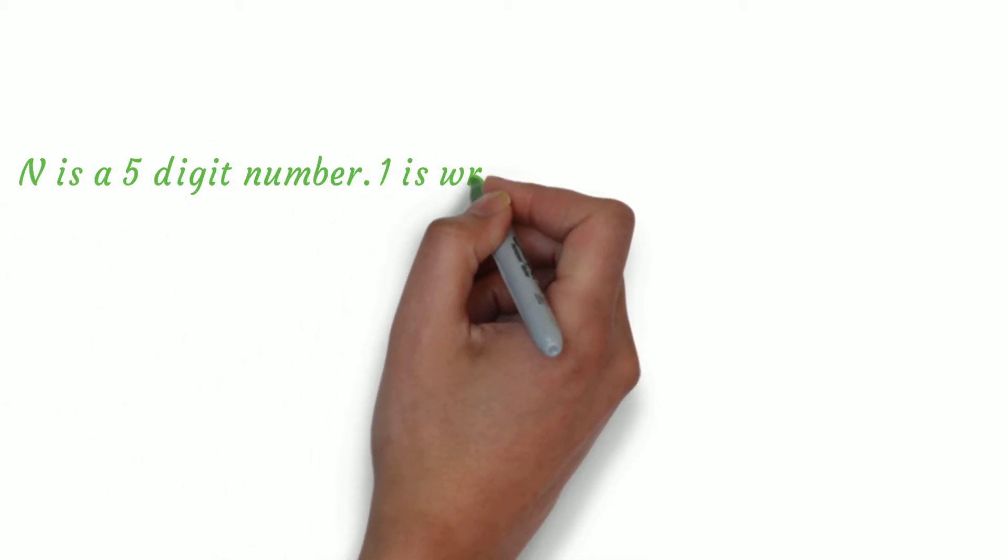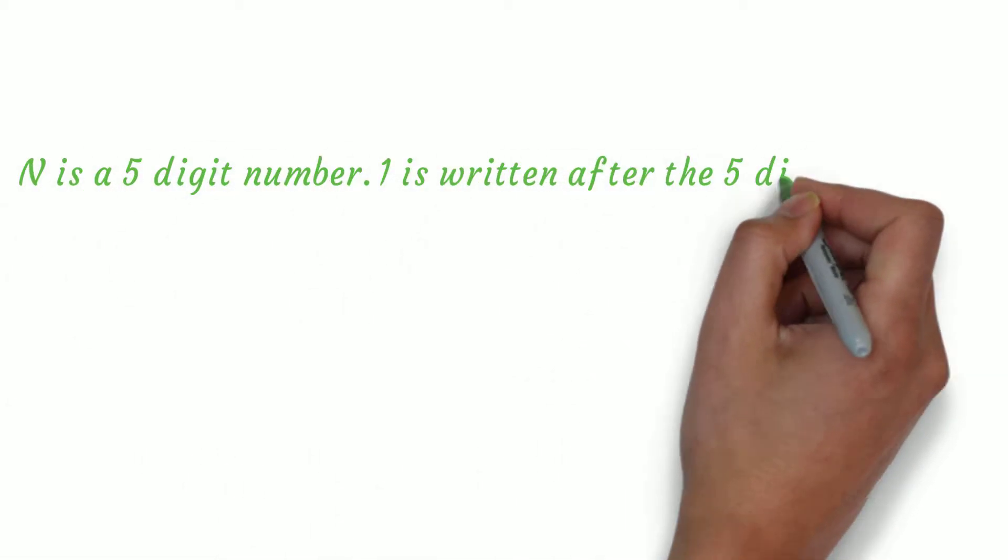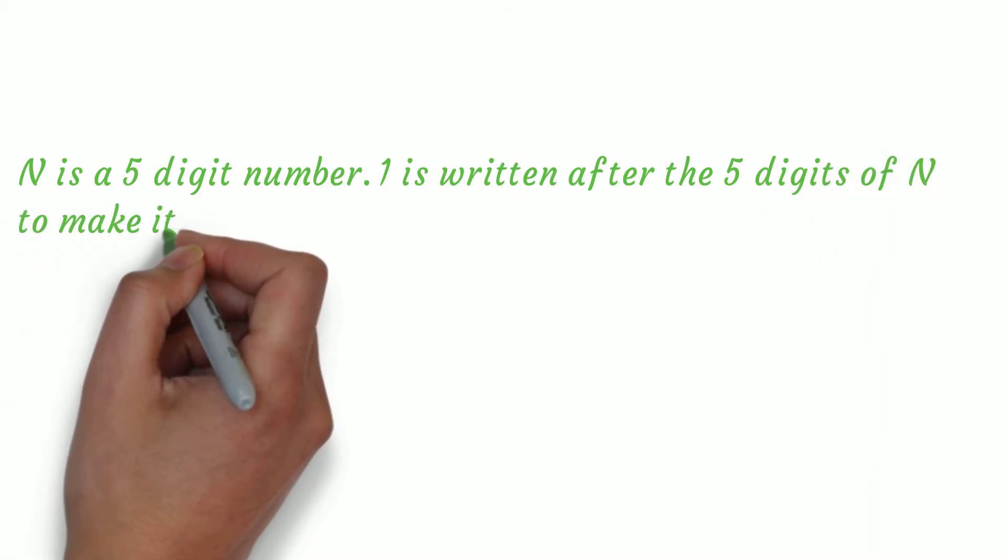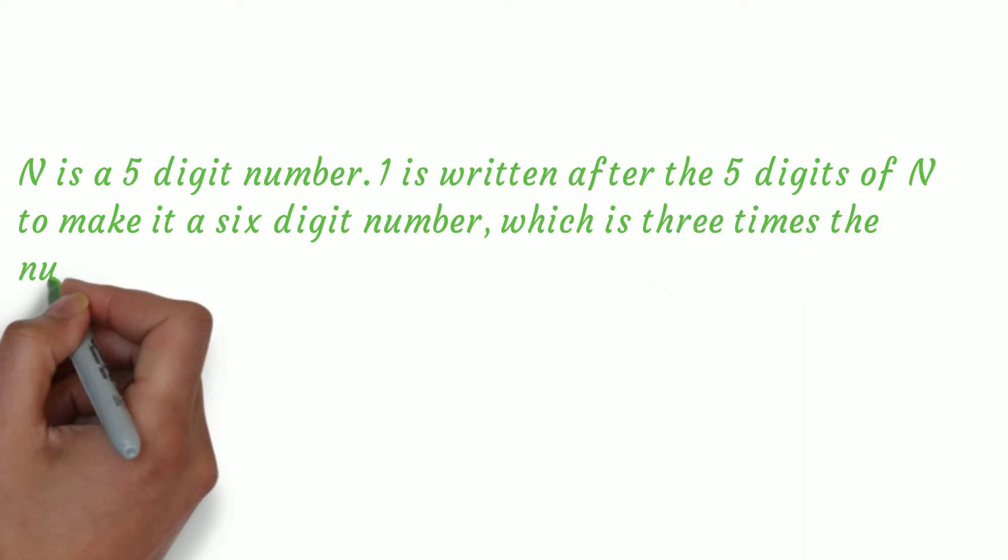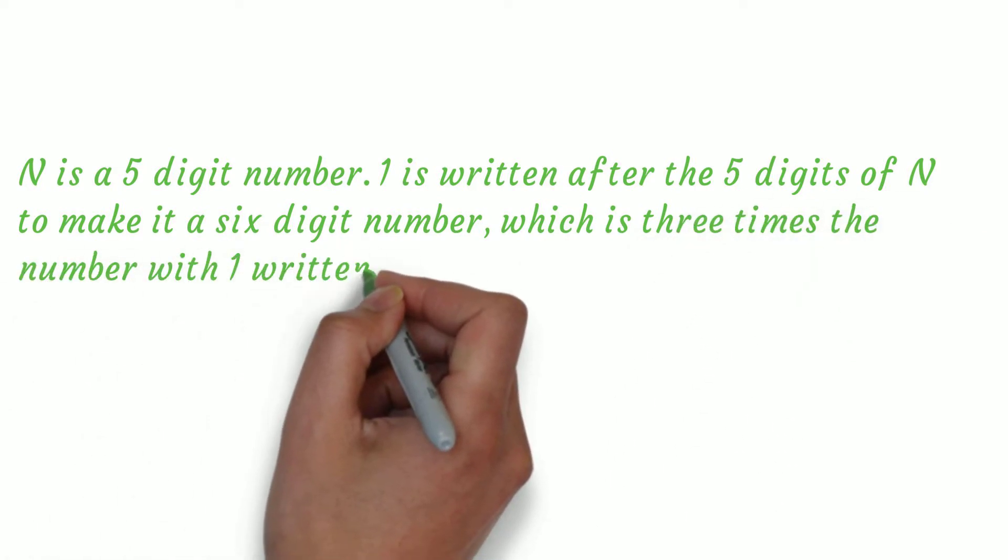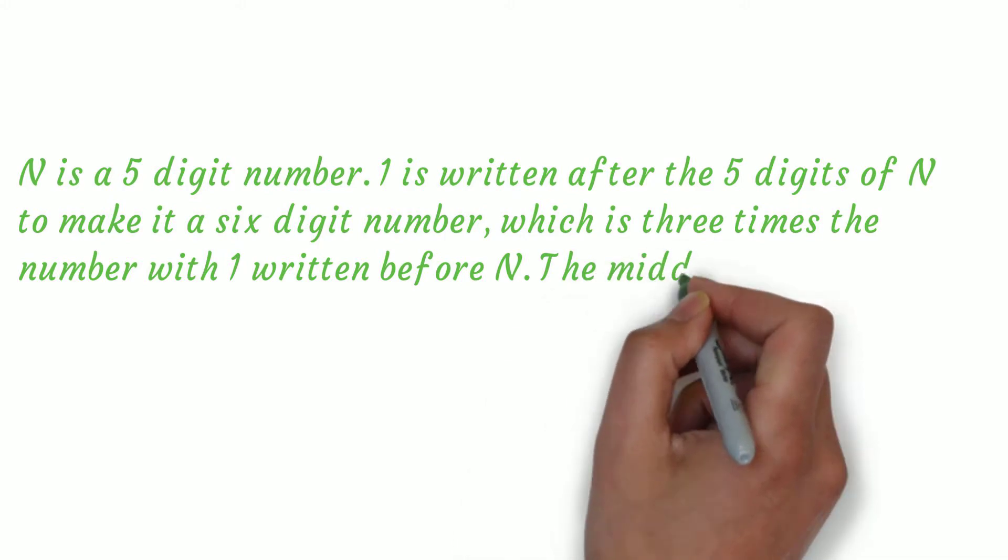n is a 5-digit number. 1 is written after the 5 digits of n to make it a 6-digit number which is 3 times the number with 1 written before n. The middle digit of n is.